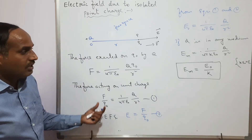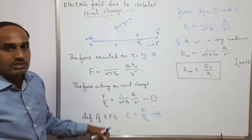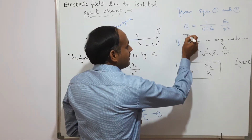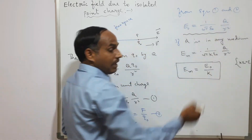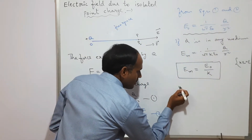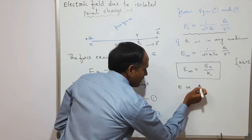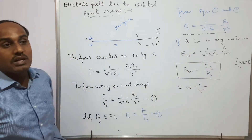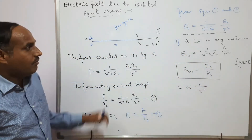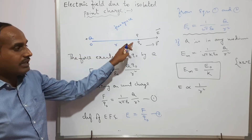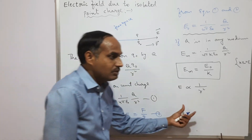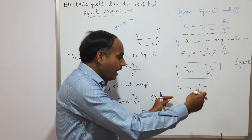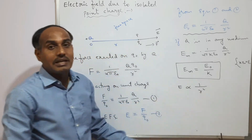This is how we find the electric field strength due to a point charge. From the expression, whether in a medium or in free space, the electric field strength at any point is inversely proportional to the square of the distance of that point from the charge. This means as we move away from the point charge, the electric field strength decreases.